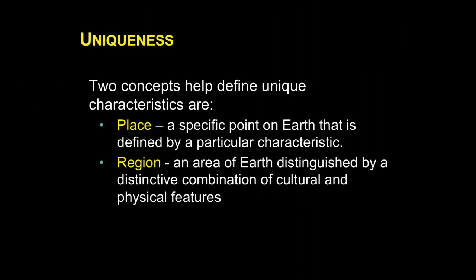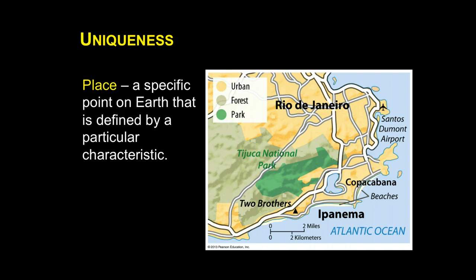The two concepts that define how things are unique are place and region. Place is simply a specific point on the earth defined by a particular characteristic — something that makes it different and gives it a significance you won't find elsewhere. For example, Rio de Janeiro can be looked at as a specific place: it is on the Atlantic coast, in South America, near national parks in Brazil, making it a unique place.